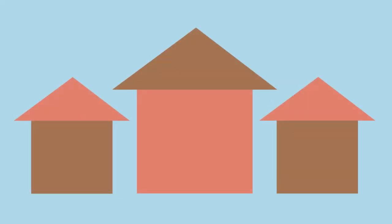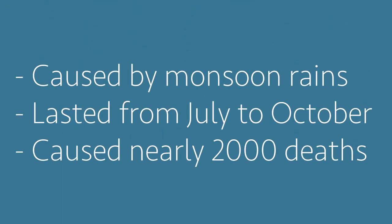The second most deadly natural event in 2019 was a flood caused by monsoon rains. This took place in northern India and lasted from July to October, causing nearly 2,000 deaths.